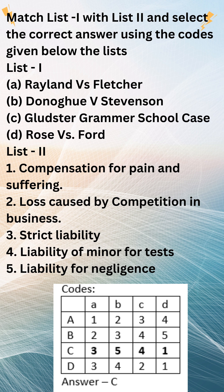Lord Atkin also identified three factors to consider in determining whether a duty of care exists. Foreseeability: could the defendant reasonably have foreseen that their actions or omissions would cause harm to the claimant? Proximity: is there a sufficiently close relationship between the defendant and the claimant? Policy considerations: are there any public policy reasons why a duty of care should not be imposed? Lord Atkin held that the manufacturer owed a duty of care to the consumer, even though there was no contract between them, because it was reasonably foreseeable that if the manufacturer failed to take reasonable care to ensure the safety of its products, consumers would be harmed.